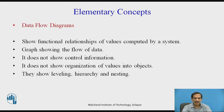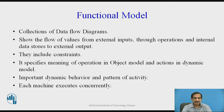We represent a functional model as a data flow diagram, which shows the functional relationships of values computed by a system. These are graphs showing the flow of data. It does not show control information and does not show organization of values into objects. They show leveling, hierarchy, and nesting. A functional model is a collection of all such data flow diagrams, which show the flow of values from external points through operations and internal data stores to external output. They include constraints and specify the meaning of operations in the object model and actions in the dynamic model.